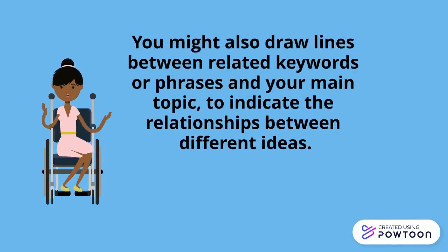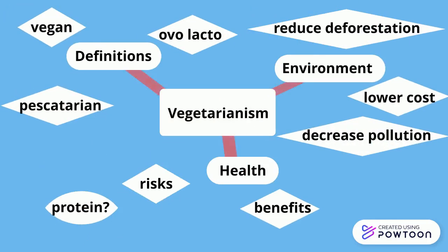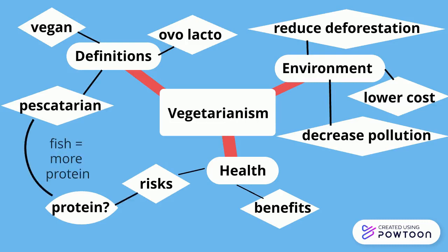You might also draw lines between related keywords or phrases and your main topic to indicate the relationship between different ideas. Here I've connected my main topic, vegetarianism, to the three subtopics, then connected each subtopic to its smaller concepts. I might also include lines indicating relationships between subtopics and concepts. Here I've indicated a relationship between the potential health risk, lack of protein, and the definition pescatarian. I'll then conduct research to learn more about this possible connection.